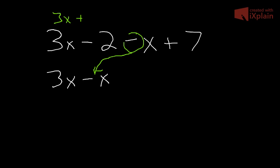3x, instead of minus 2, we could say plus negative 2, plus negative x, and plus 7.